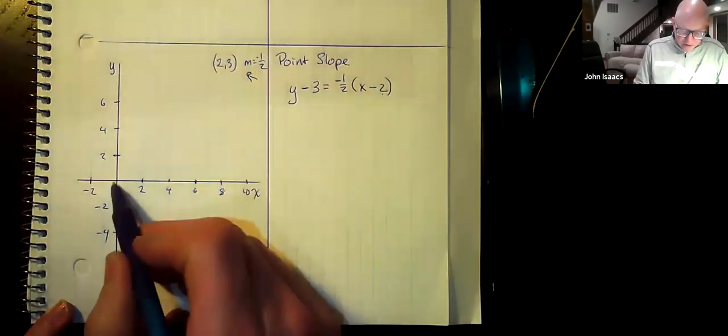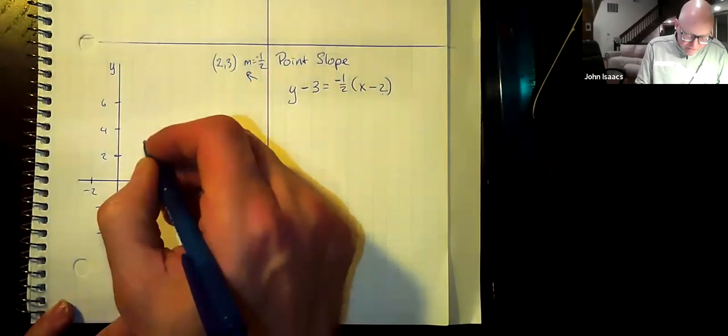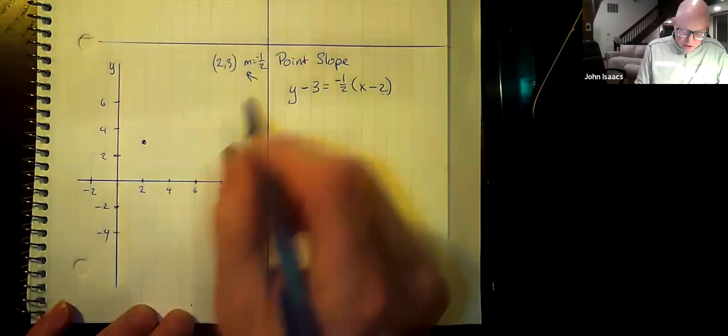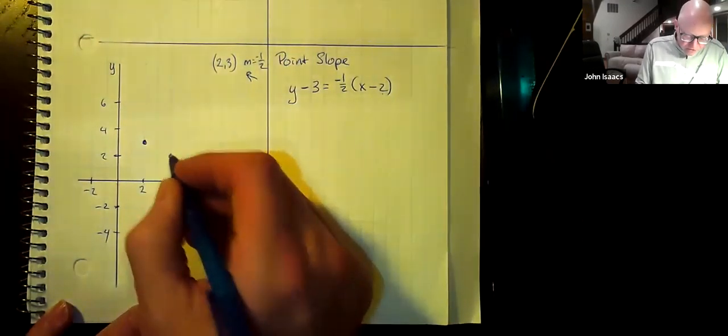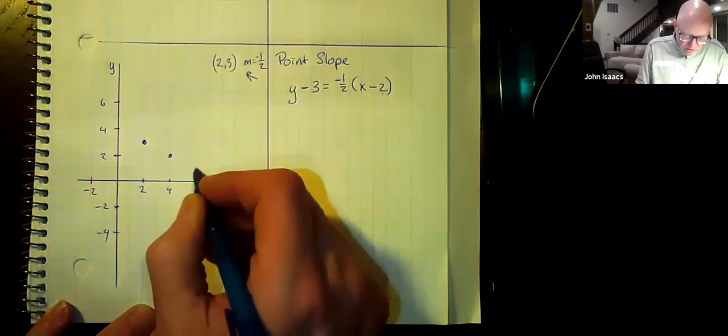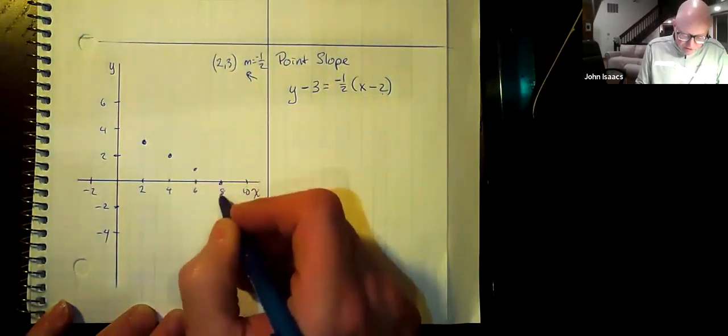Okay, so let's graph that. We go over 2, we go up 3, go right there. Slope of negative one-half. So I'm going to go down one while I go across to the right two spaces. If we go down one again, across the right two spaces, down one again, across the right two spaces.